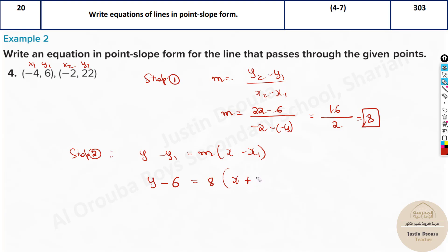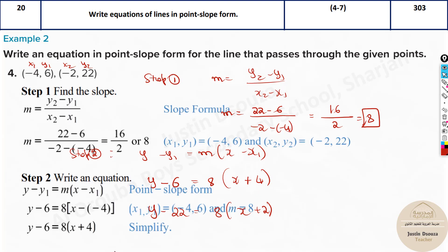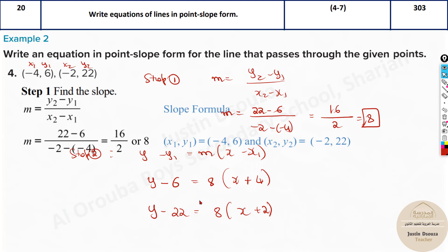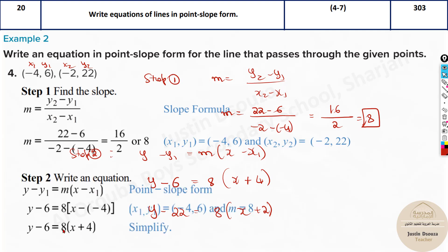The other answer would be y minus, write this, y2 is 22 equals 8 into x minus of minus 2 will be plus 2. This is the other answer. Both are the correct answers, so this is the point-slope form. They have written the first answer, that's it. This is the point-slope form.